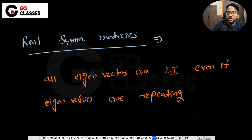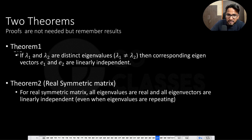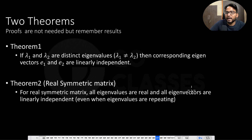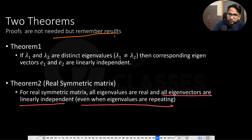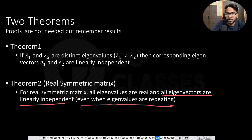To summarize two theorems: first, if lambda 1 and lambda 2 are not equal, then the corresponding eigenvectors are linearly independent. Second, for real symmetric matrices, all eigenvectors are linearly independent irrespective of whether eigenvalues are repeating or not. Proofs are not required for these two theorems — just remember the statements.